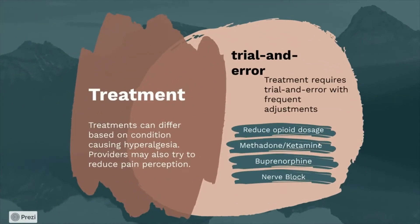Treatments can differ based on the condition causing the hyperalgesia. Providers may try to reduce pain perception through a process of trial and error with frequent adjustments to give patients the best possible experience. Treatments include reduced opioid dosage for opioid-induced hyperalgesia, medications like methadone, ketamine, or buprenorphine, and nerve blocks, which use a local anesthetic to target a group of nerves causing the pain.